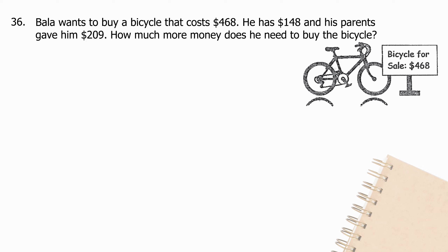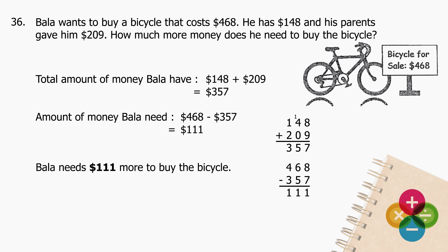Question 36: Bala wants to buy a bicycle that costs $468. He has $148 and his parents gave him $209. How much more money does he need? Total money Bala has: add $148 to $209 and the sum is $357. Amount still needed: subtract $357 from $468 and the difference is $111. Bala needs $111 more to buy the bicycle.